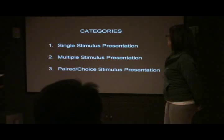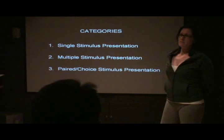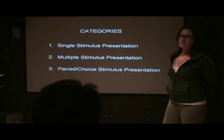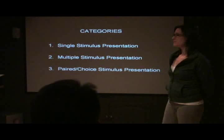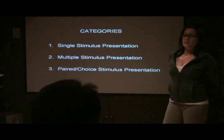So there are three general categories of systematic preference assessments. The first being the single stimulus presentation. With this type, each item would be presented individually and the responses for each item would be scored one at a time over several trials. The multiple stimulus presentation — you would present all of the items at once and record which ones the child approaches.